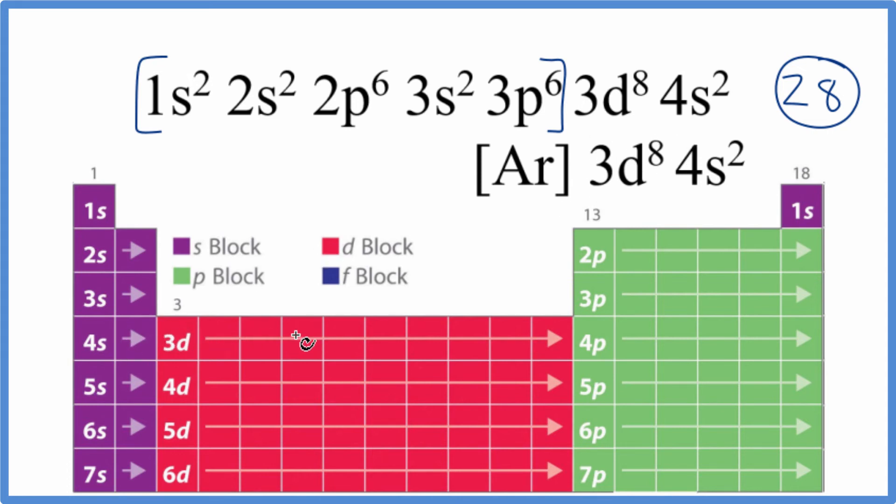So the 3d orbital: 1, 2, 3, 4, 5, 6, 7, 8. This should be the element we're looking for on the periodic table.